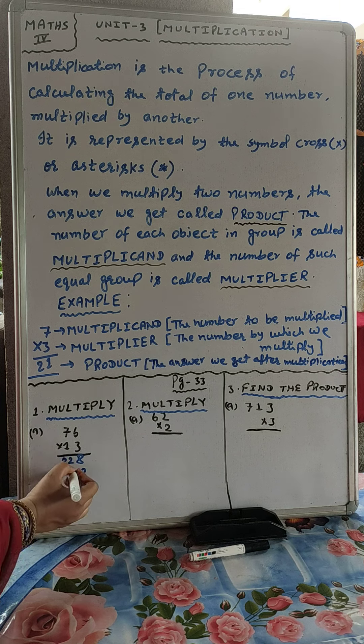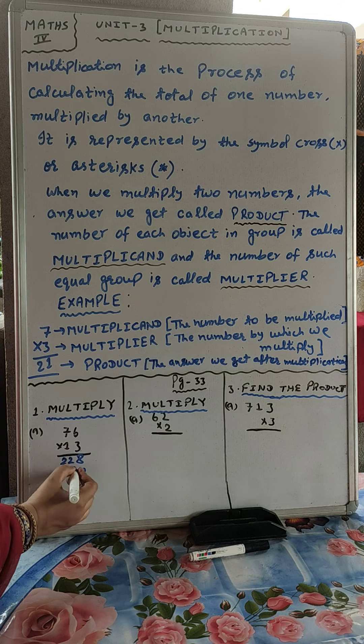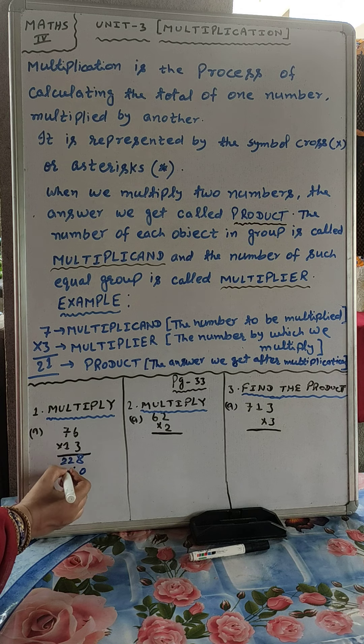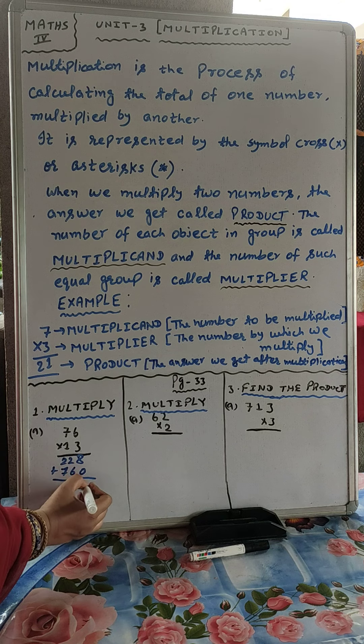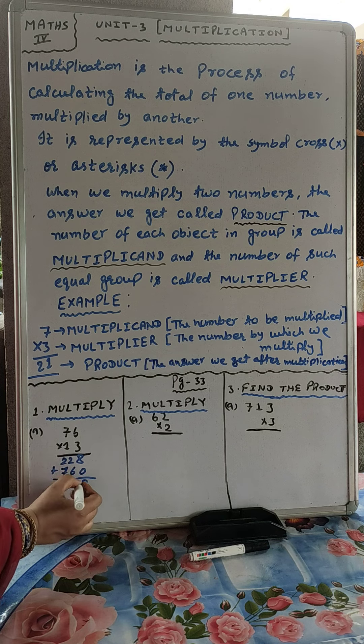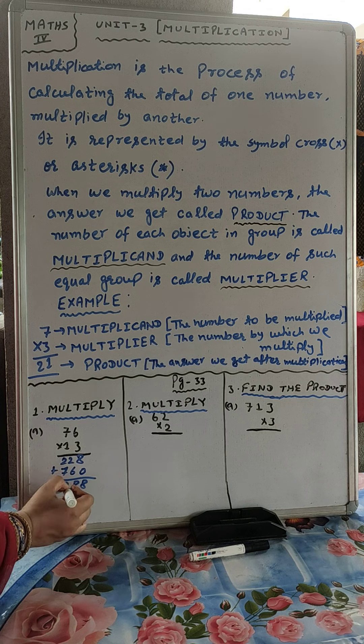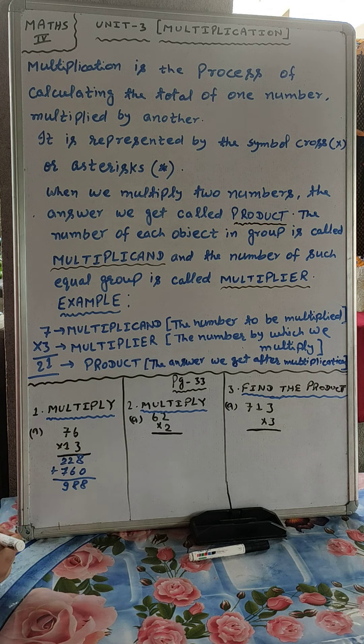Then after we will start writing from the second digit. 1×6 is 6. 1×7 is 7. Put here plus 0, 8, 6 plus 2 is 8, and 7 plus 2 is 9. That will be 988.